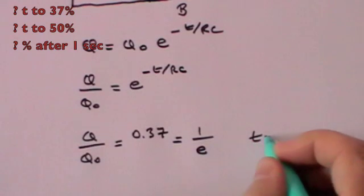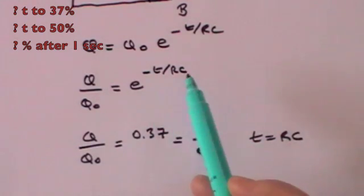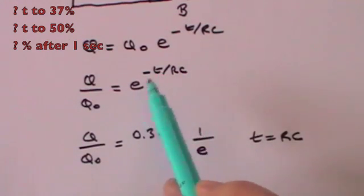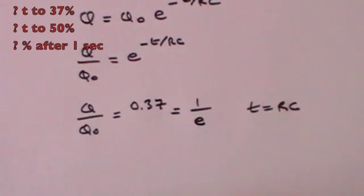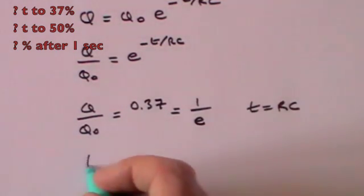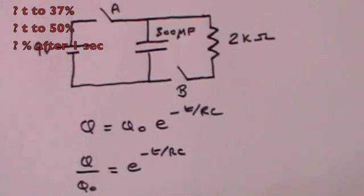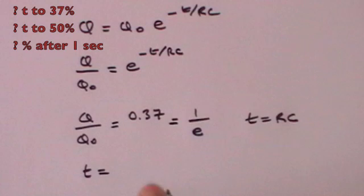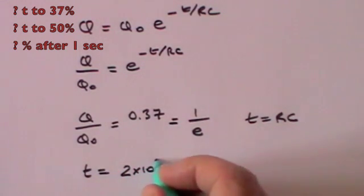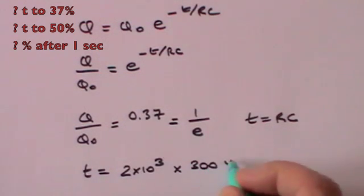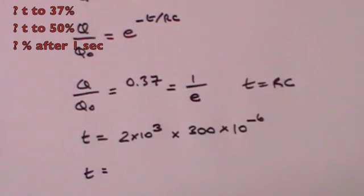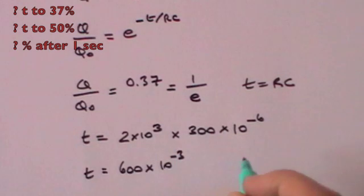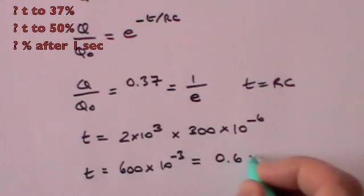That arises when t equals RC, because then the formula becomes e to the minus 1, which is 1 over e. So what is t when it equals RC? T equals R times C: R is 2 kilohms, so 2 times 10 cubed, times C which is 300 microfarads, 300 times 10 to the minus 6. Multiplying out gives t equals 600 times 10 to the minus 3 seconds, which equals 0.6 of a second.